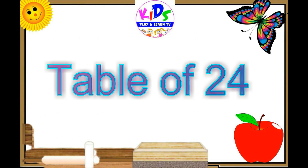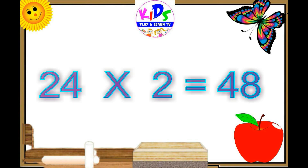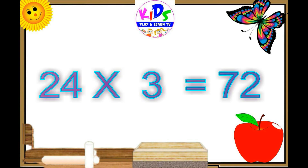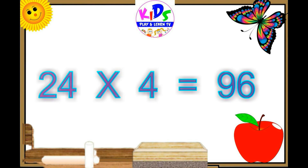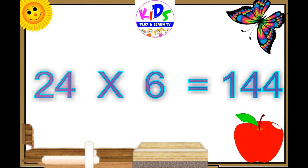Hey students, today we are going to learn the table of 24. 24 ones are 24, 24 twos are 48, 24 threes are 72, 24 fours are 96, 24 fives are 120, 24 sixes are 144.